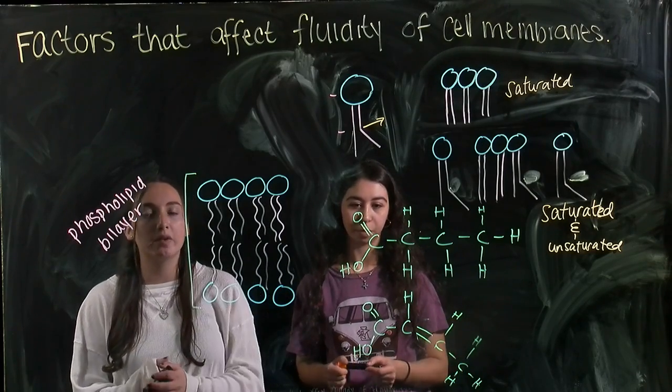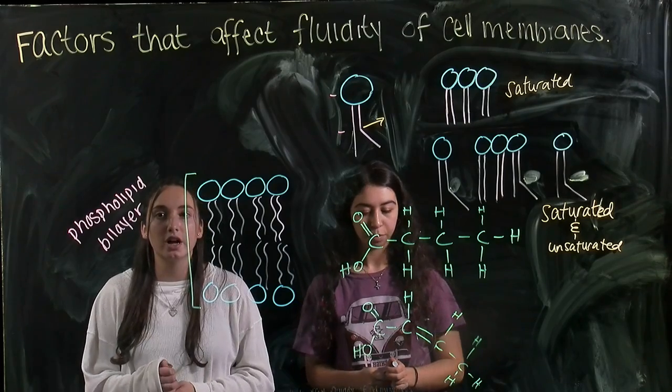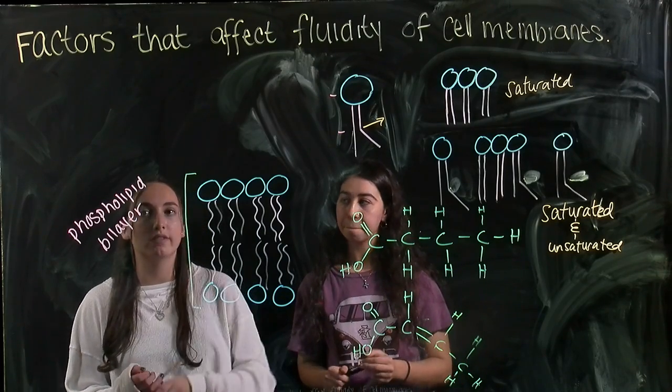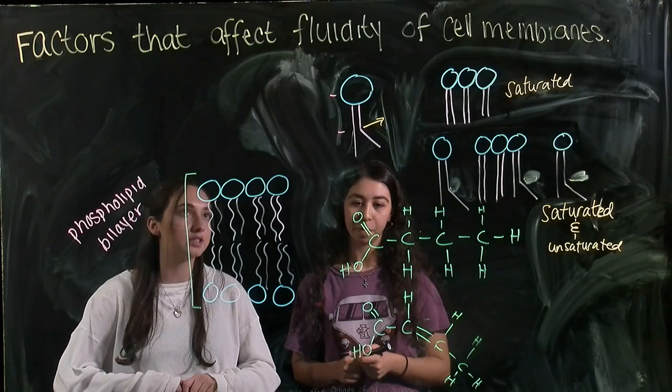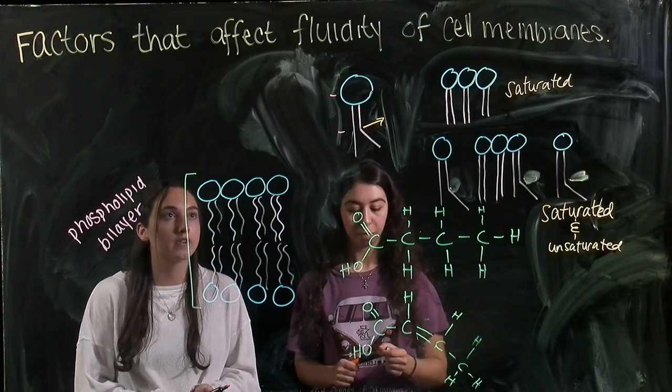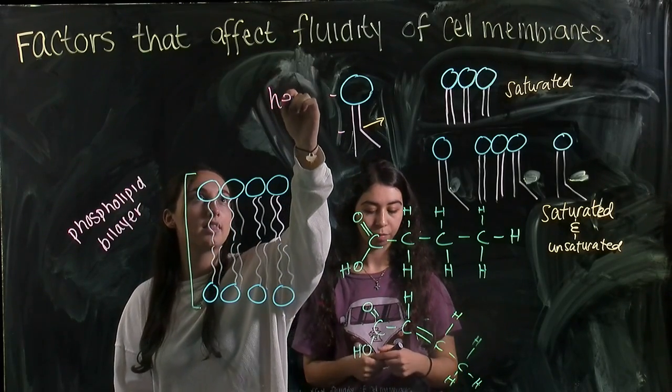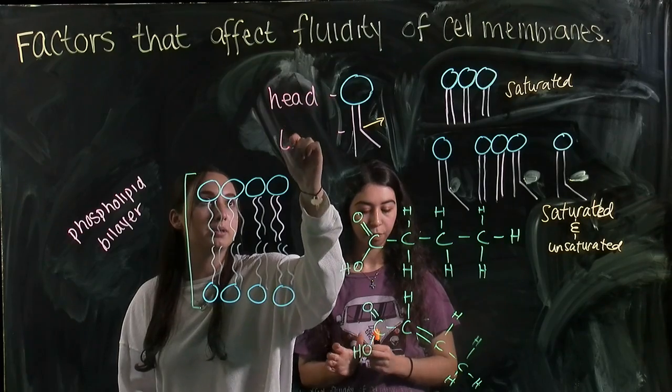Right here we can see that, and we refer to this as phospholipids. So we call this entire structure a phospholipid bilayer, and each phospholipid contains a hydrophilic head and a hydrophobic tail. If we look more closely, this would be the head, and this would be the tail.